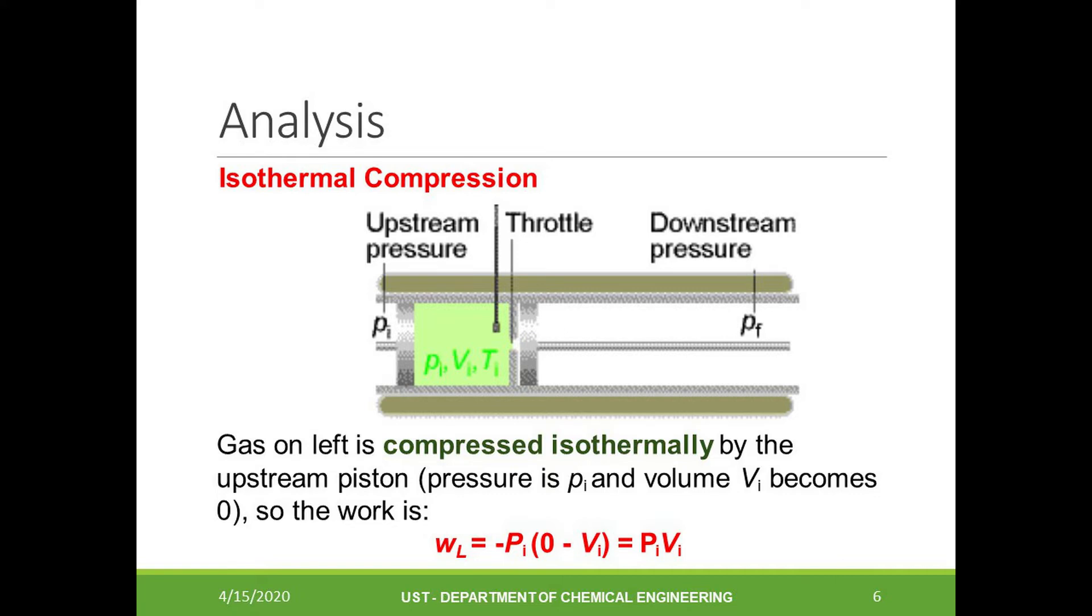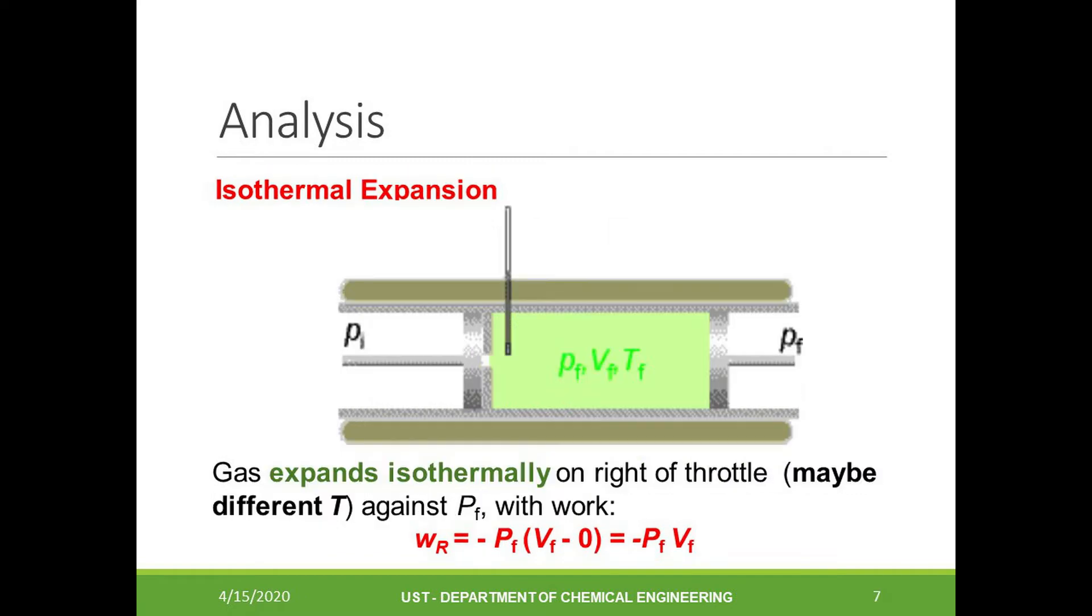In order to do this, we have to analyze each step of the experiment. Let's consider what is happening on the left side of the pipe before the actual process. The initial volume of gas on side one is V1, the pressure is P1, and temperature is T1. The process starts with volume V1 and it ends at volume zero on the left side of the compartment. We know that work is negative P delta V, so the work done on the left side is given by this equation.